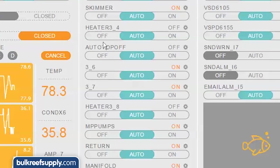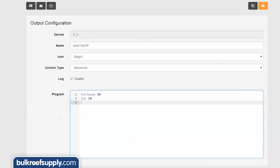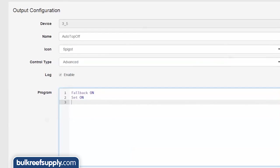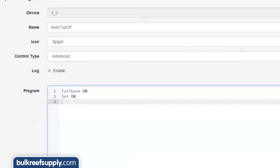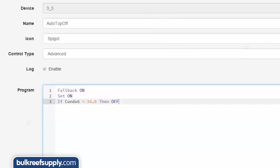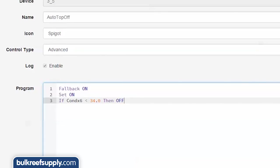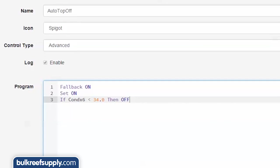First, select the proper outlet in fusion and click the settings gear next to it. Open the advanced tab, and since we want it to turn off my auto top off if the salinity ever drops significantly, I will enter if contact 6 less than 34 then off, which will turn off the power to my auto top off if the salinity ever drops below 34.